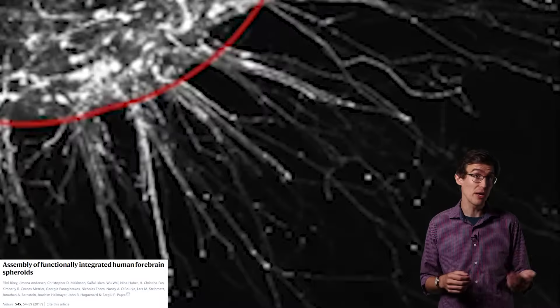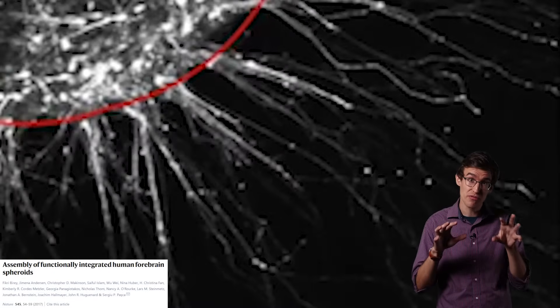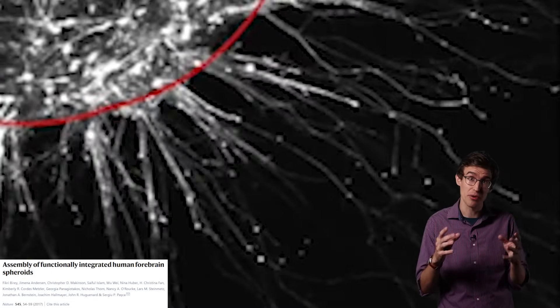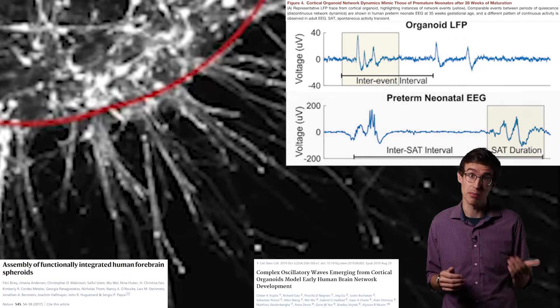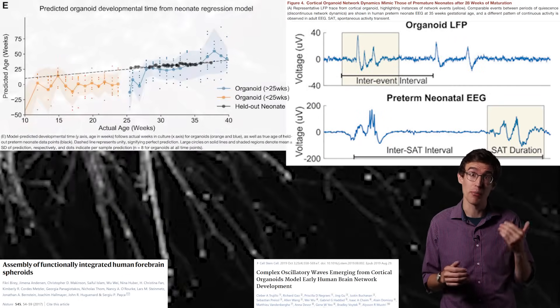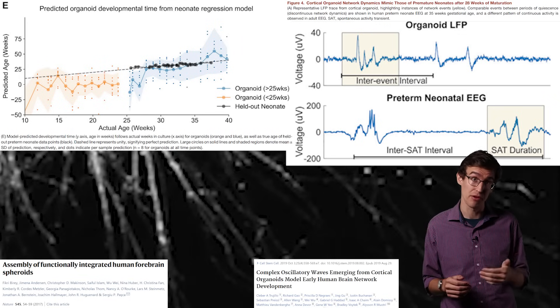If you follow the recipe for cerebral organoids, you'll grow a bunch of neurons that start talking to each other and making brainwaves that look like a developing human brain. Specifically, they look like a premature baby around 30 to 35 weeks.